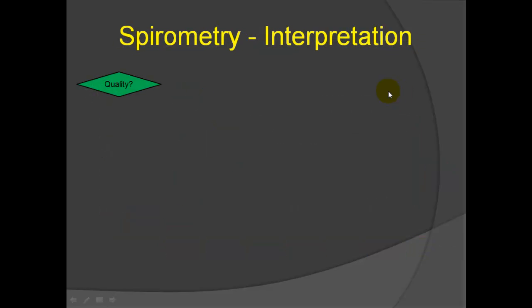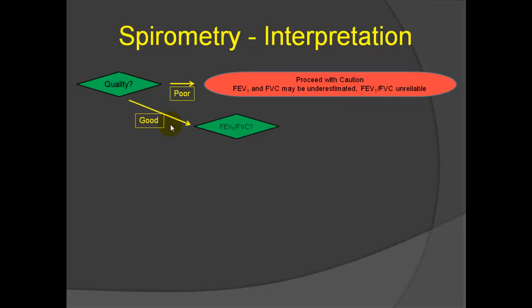How do we interpret spirometry? We first and foremost look at the quality of the study. If the quality is poor, for example, the patient doesn't go out for six seconds, or their flow is erratic, as I'll show you as this talk goes along, we have to interpret the study with caution, because either the FEV1 or the FVC may be underestimated, and therefore the ratio of FEV1 to FVC could be either under or overestimated and is unreliable.